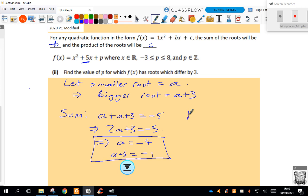The product of the roots is going to give me p. So p will be the product of the roots, which is negative 4 times negative 1, which is 4.